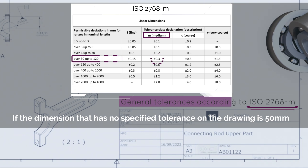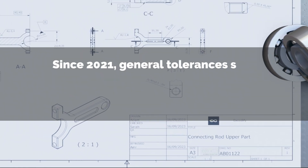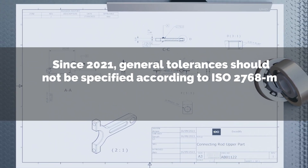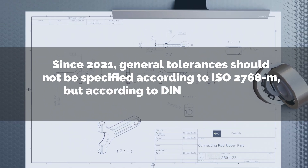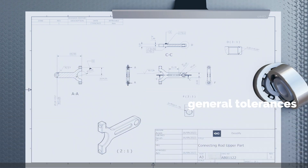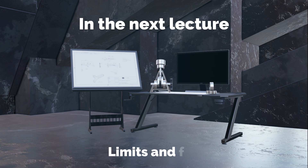Since 2021, general tolerances should not be specified according to ISO 2768 m but according to DIN EN ISO 22081, which uses geometric dimensioning and tolerancing (GD&T) to control general tolerances. This topic will be covered later. That's it for this lecture. In the next lecture we're going to talk about limits and fits — see you then.